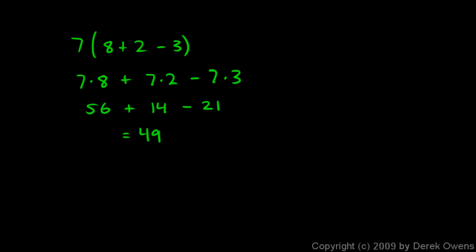Here's another example. This one will have some variables. 4 times x plus y minus 3. Well the 4 will get multiplied by the x, by the y, and by the minus 3. So let's do that.